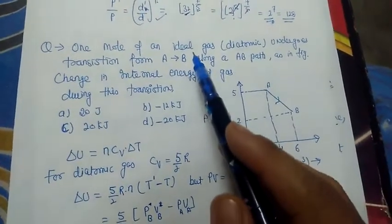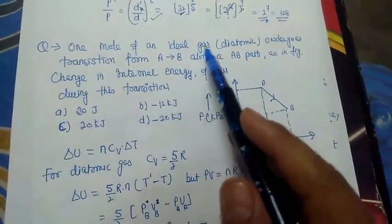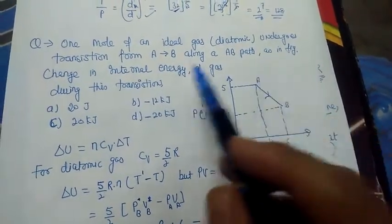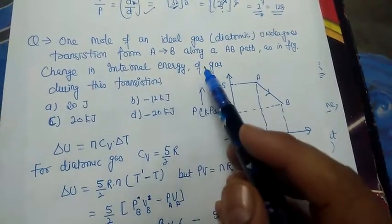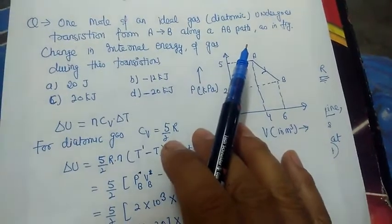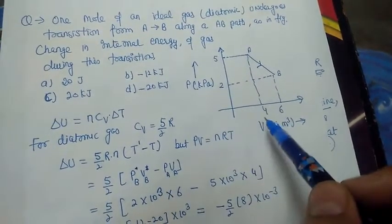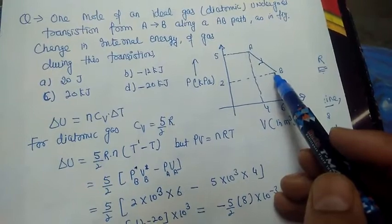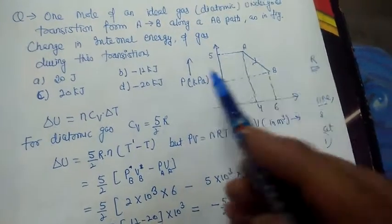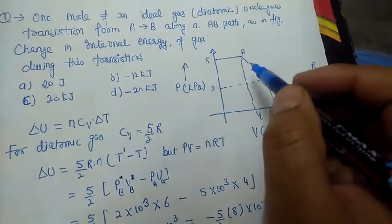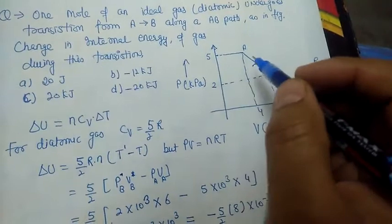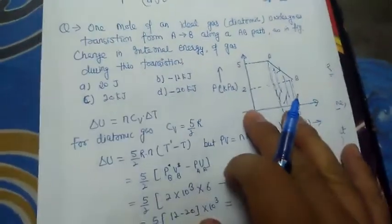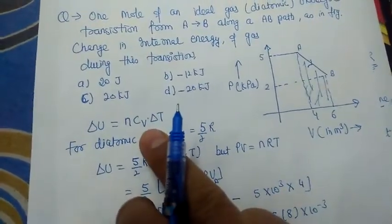Another important problem: one mole of an ideal diatomic gas undergoes a transition from state A to state B as shown in the pressure-volume indicator diagram. We have to calculate the change in internal energy of the gas during this transition. This is a non-cyclic process.